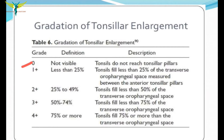In grade zero, the tonsillar enlargement is not visible to the naked eye and the tonsils do not reach the tonsillar pillars. In grade one plus, the tonsil is enlarged up to less than 25 percent of its actual size, filling less than 25 percent of the transverse oropharyngeal space measured between the two anterior tonsillar pillars.